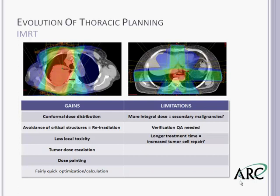However, the benefits of IMRT do come at a cost. First, it's more complex, requiring verification QA. Second, there's the possibility of increased integral dose, where a larger volume of normal tissue receives a low dose of radiation — raising concerns about secondary malignancy. Third, there can be a substantial amount of time to send information to the treatment machine, rotate the gantry, set the field, and verify it, which has led to concerns about tumor cell repair during treatment delivery.